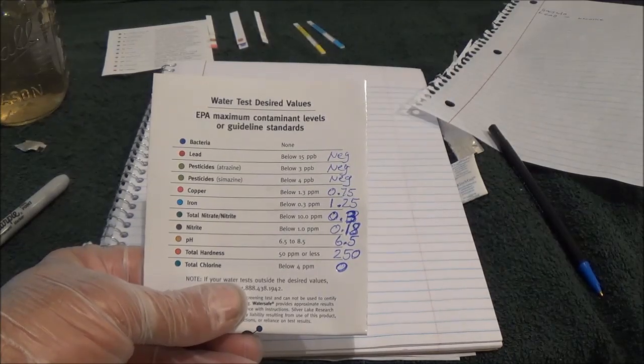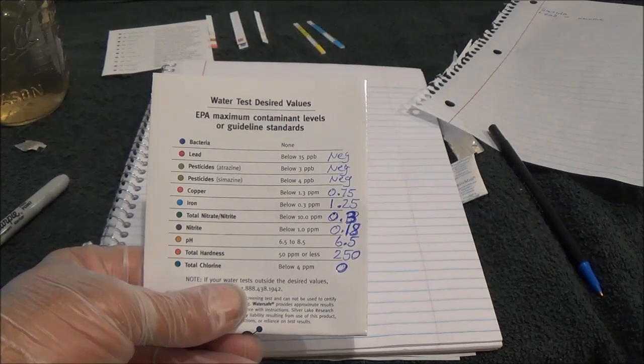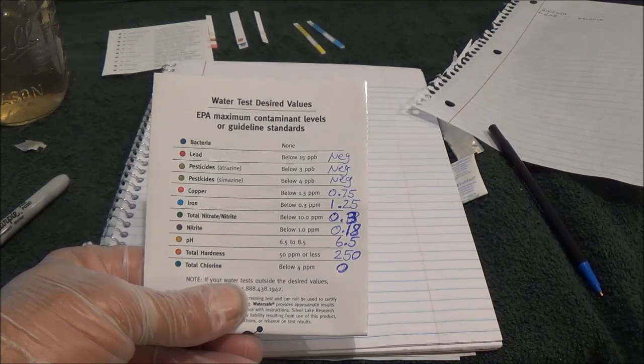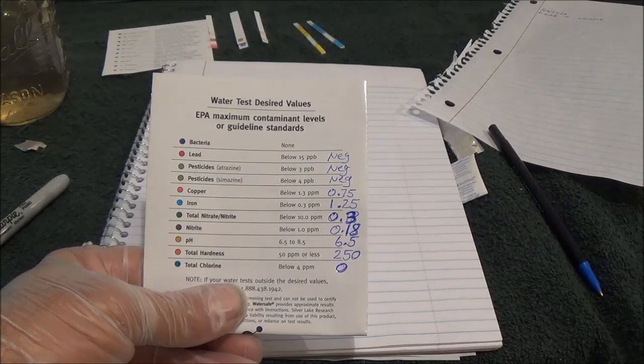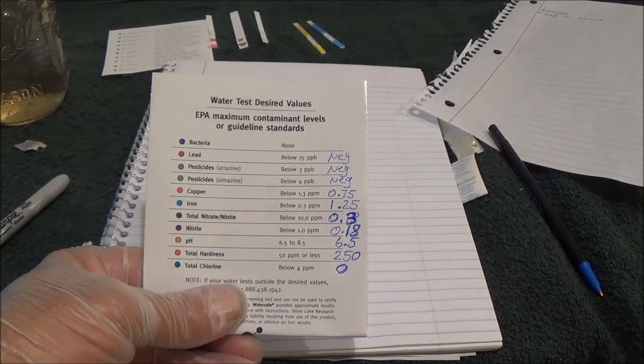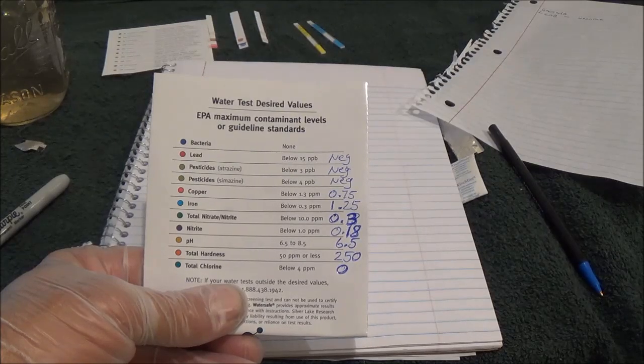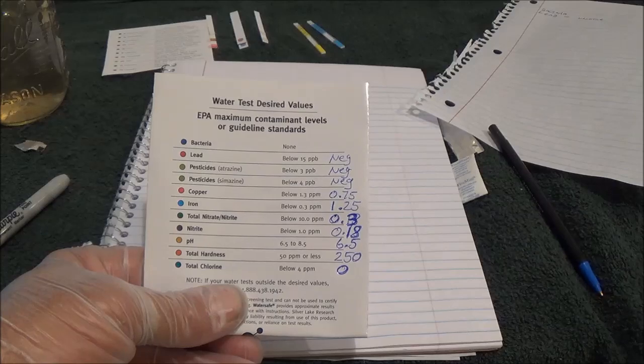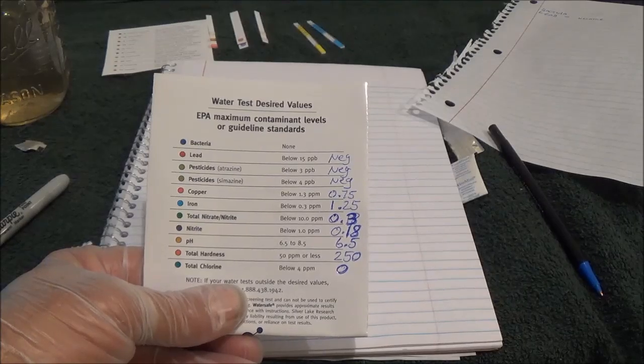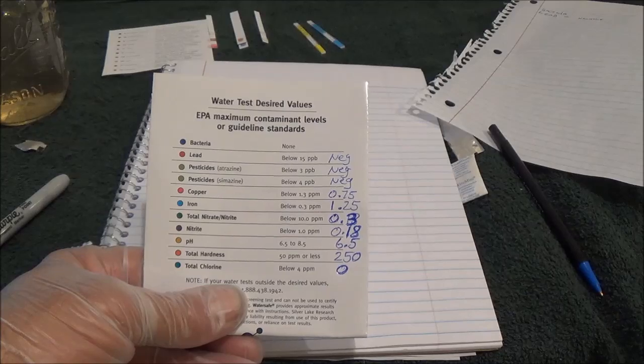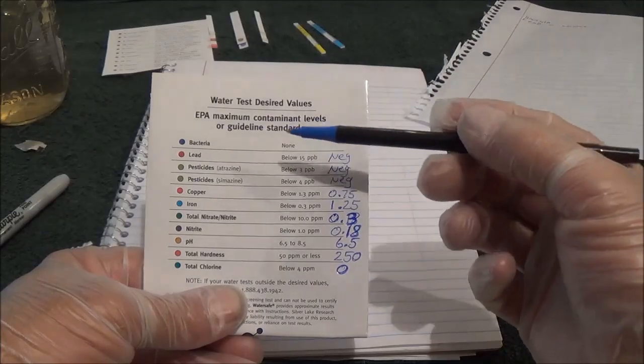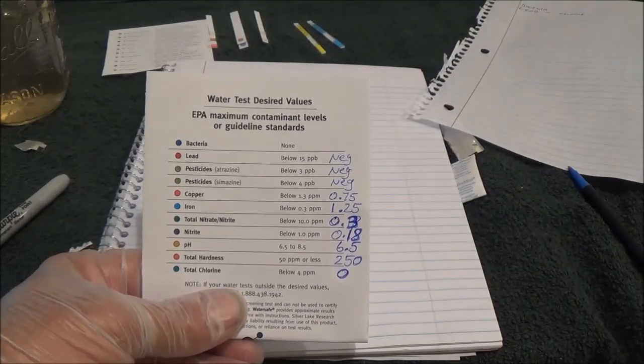Total nitrates and nitrite, whatever that combination was, was supposed to be below 10 parts per million. We were at 0.3. And nitrites were supposed to be below 1.0 parts per million. We were at 0.18. pH is supposed to be between 6.5 and 8.5. We were at 6.5. The total hardness of the water should be 50 parts per million or less. We were at 250. We knew we were going to have hard water, so basically it's saying don't wash your clothes. Total chlorine is supposed to be below 4 parts per million. We were at 0. So basically looking at all of this as far as drinking water, we're doing good. But the big one here is the bacteria, and we'll be back in two days to check that out and end this video.